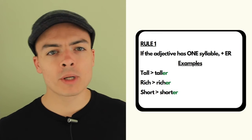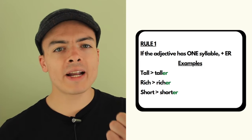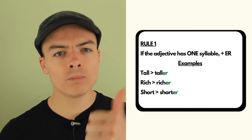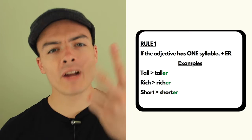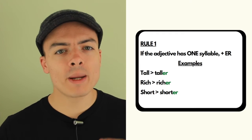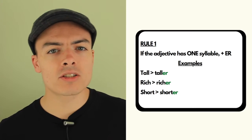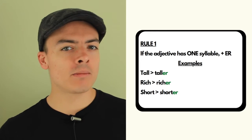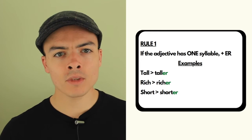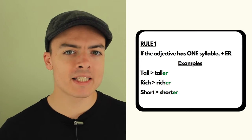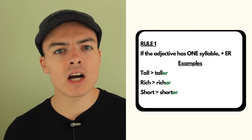So if the adjective has one syllable, for example tall, rich, short—that's one syllable—if the adjective has one syllable, we add er. So tall becomes taller, rich becomes richer, short becomes shorter. So that rule is very easy: one syllable plus er.